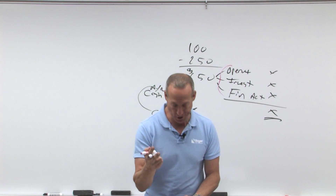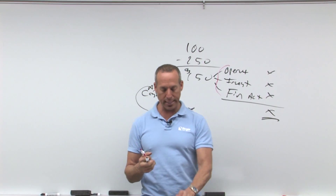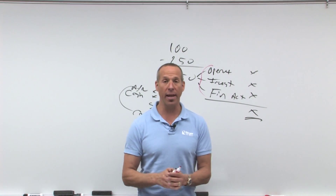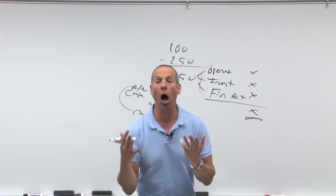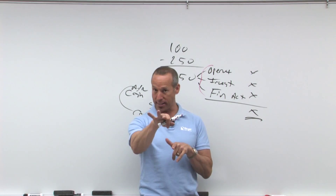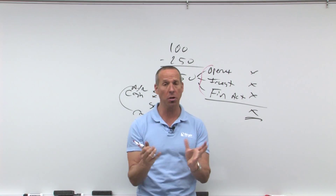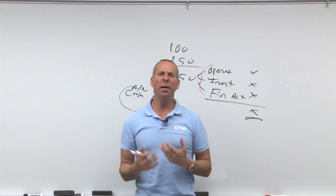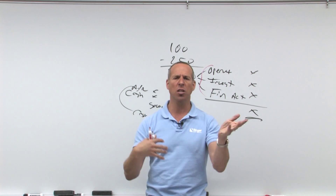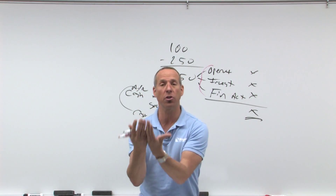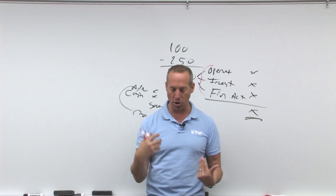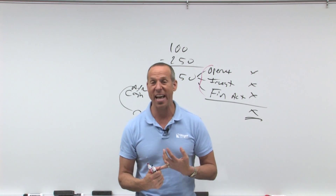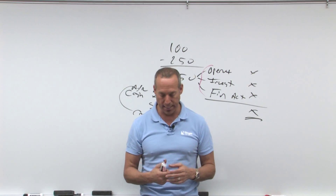Payments for cost of goods sold and SG&A. Interest received and paid — circle that — interest received, interest paid is operating under GAAP. It's gonna be different under IFRS, so that's important, but for now let's just study GAAP. Dividends received are also operating, because most companies buy stocks, bonds, and so on as a normal part of operations with their extra cash — they're just putting the cash somewhere to make money. Acquisition or disposal of trading securities. Payments for taxes — normal part of business, operating activity.